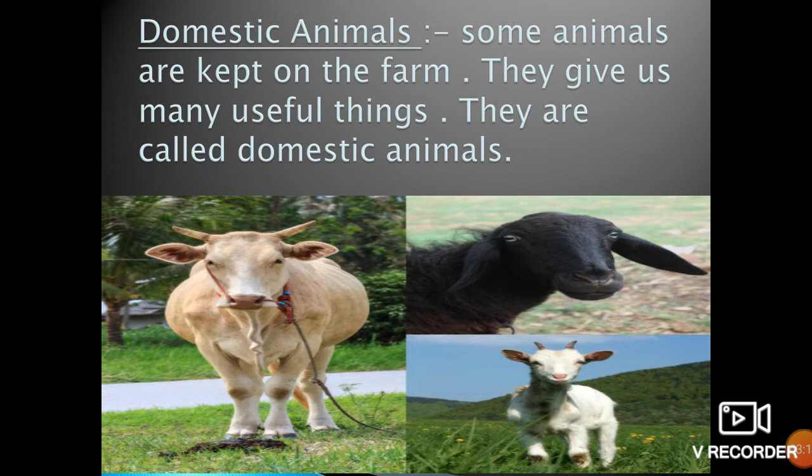Next, goat. We obtain meat and milk from the goat. Goat is also a domestic animal. Next, hen. Hen is also a domestic animal and it is very useful for us. Hen gives us eggs and chicken.